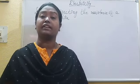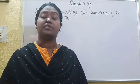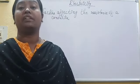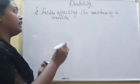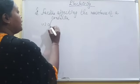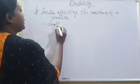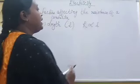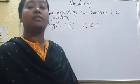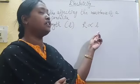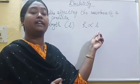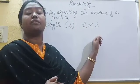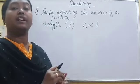The first factor is the length of the conductor, that is L. R is directly proportional to L. That means the resistance of the conductor is directly proportional to the length of the conductor. So if the length increases, the resistance of the conductor also increases.